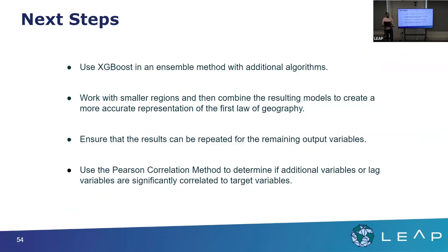For some of my next steps, I thought it would be interesting to use XGBoost with an ensemble method. I also thought it would be good to work with smaller regions but use the information around them — setting up a grid where the test data is the center, adding lag variables from all the surrounding grid points, because the weather in one area will be impacted by the previous weather in surrounding areas. I also wanted to ensure results could be repeated for the remaining output variables, and if we could use Pearson correlation first, I might have been able to identify which additional variables to include or which ones weren't necessary.